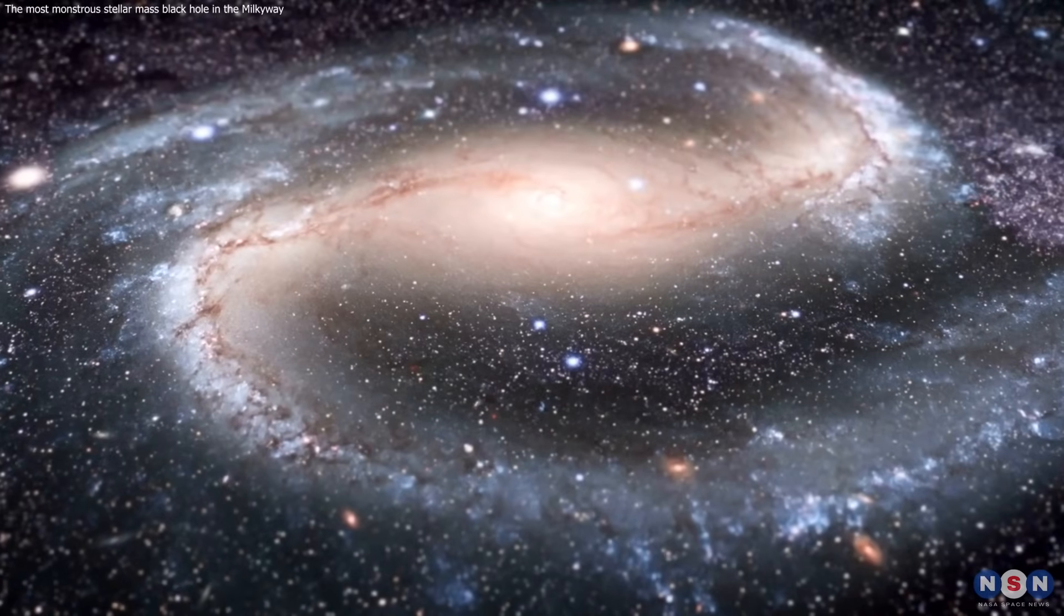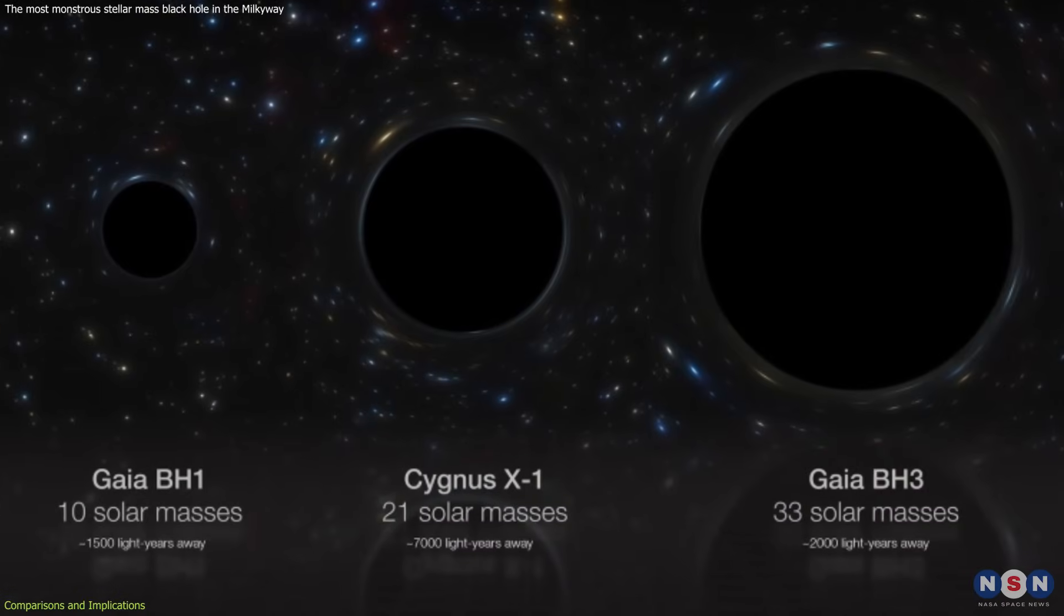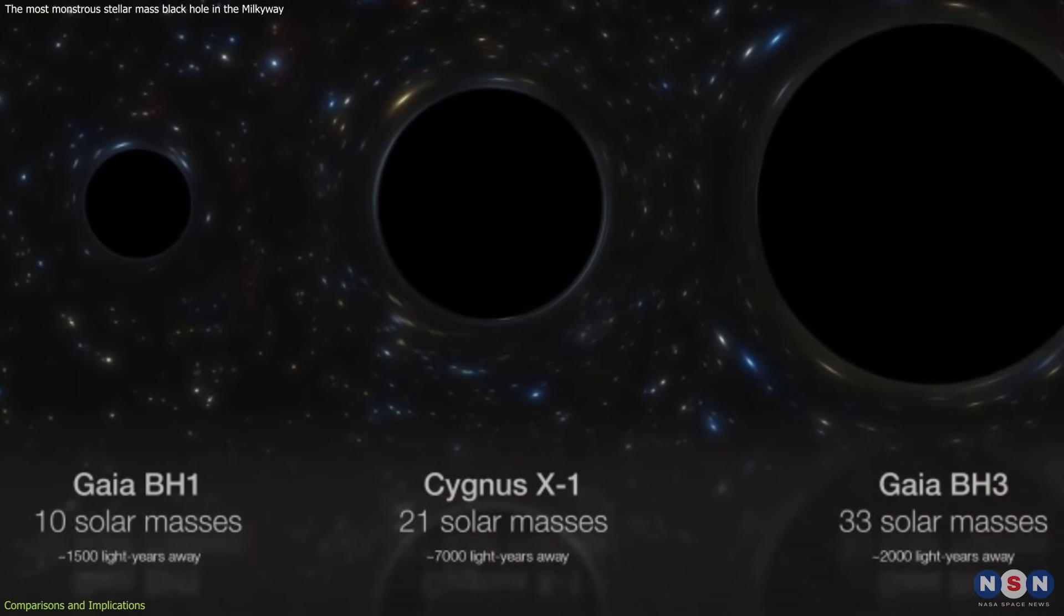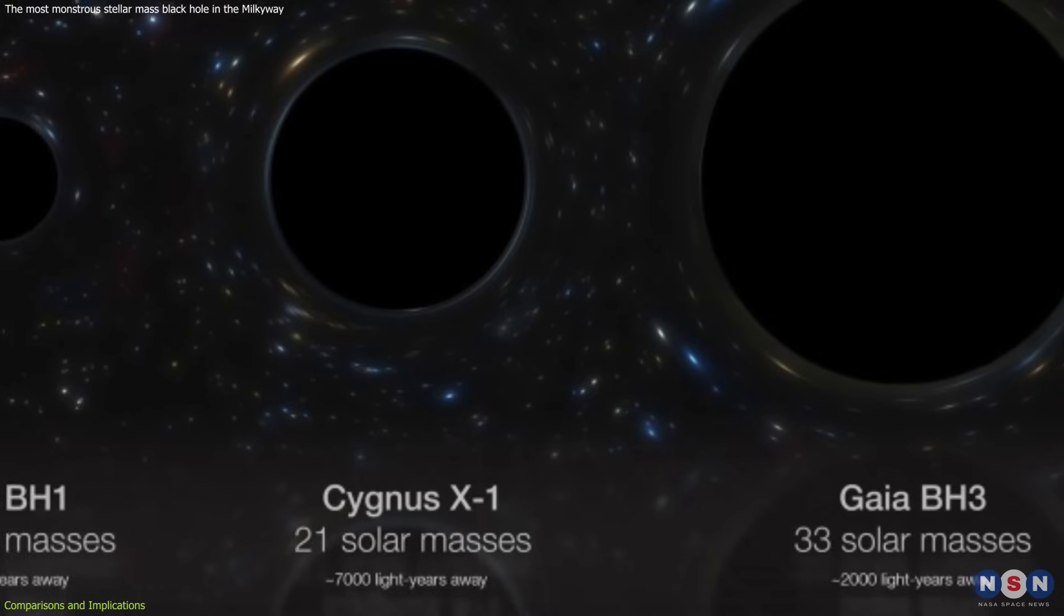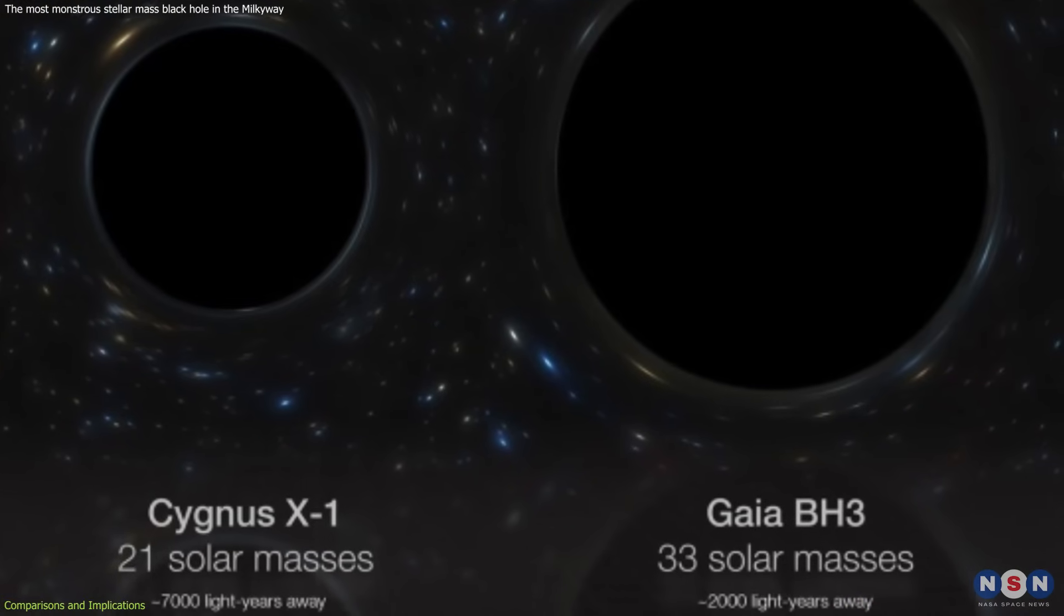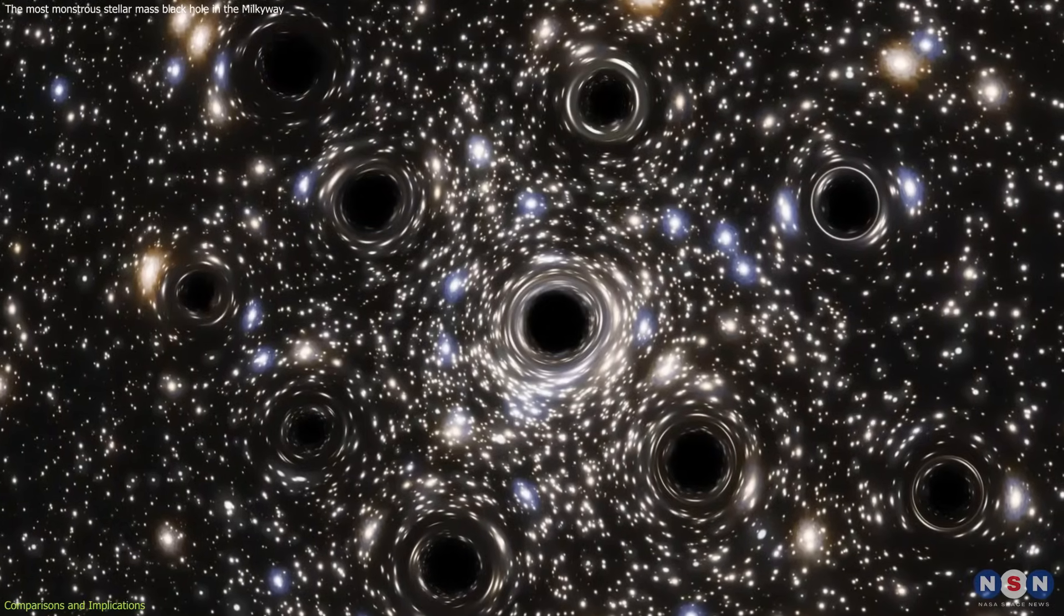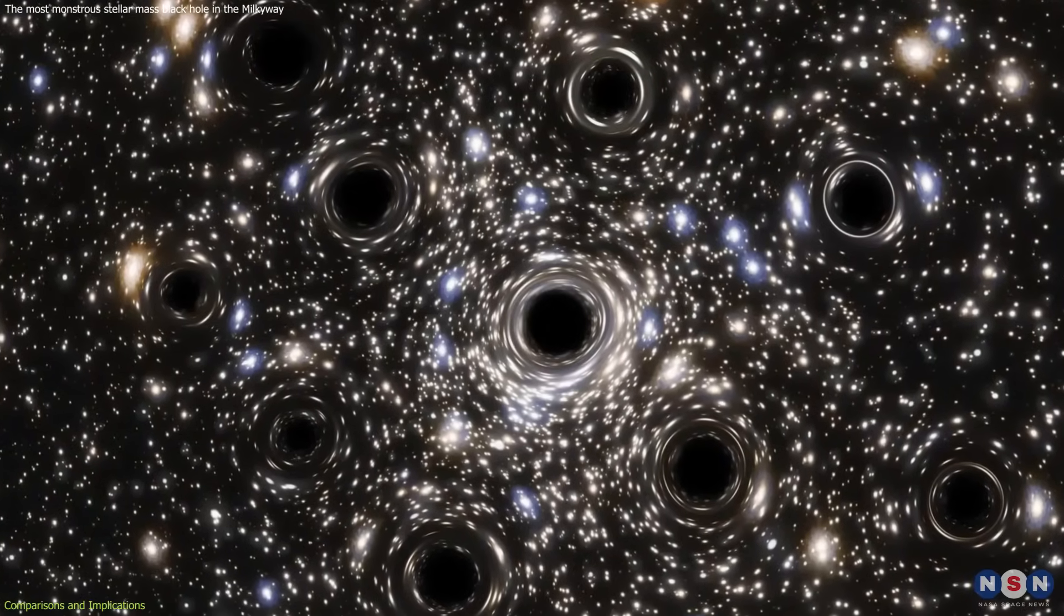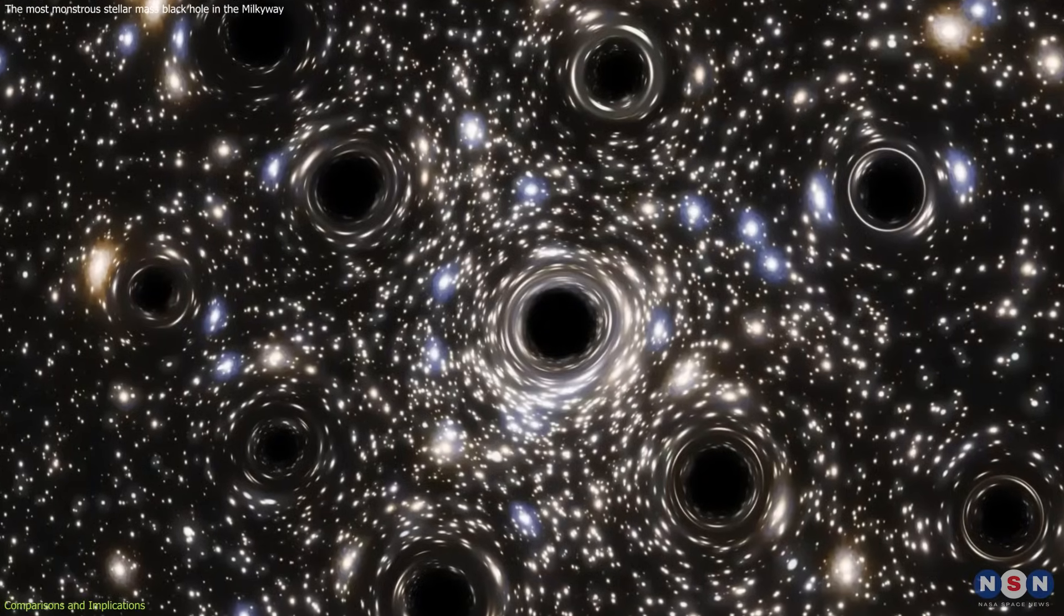Traditionally, the most massive stellar mass black hole recognized in the Milky Way was Cygnus X-1, with a mass of about 20 solar masses. Gaia BH3, at 33 solar masses, not only exceeds this, but does so in a region relatively close to Earth, suggesting that massive black holes might be more common and perhaps more evenly distributed throughout the galaxy than our previous observations had indicated.